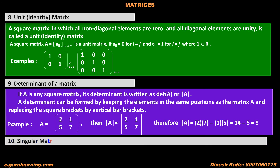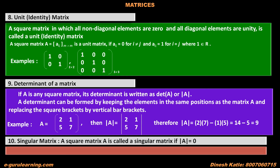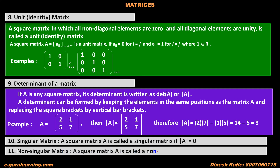The tenth type is a singular matrix. A square matrix A is called a singular matrix if its determinant is equal to 0. The eleventh type is a non-singular matrix. A square matrix A is called a non-singular matrix if its determinant is not equal to 0.